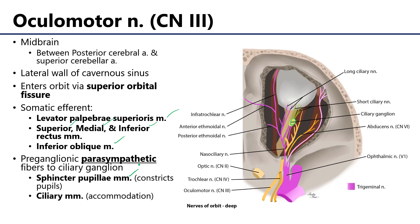The other are the ciliary muscles. The ciliary muscles are embedded in the ciliary body, and as they contract, they pull on the supportive structures out to the lens so as to bend the lens for accommodation.